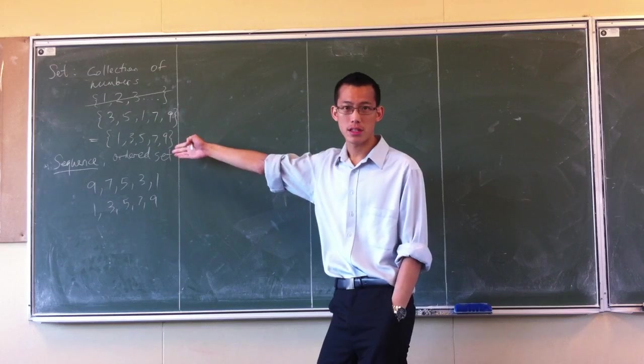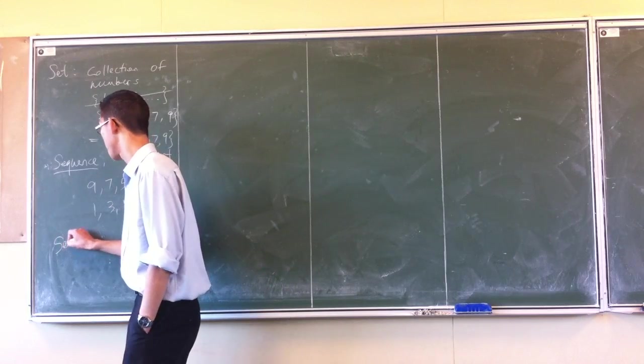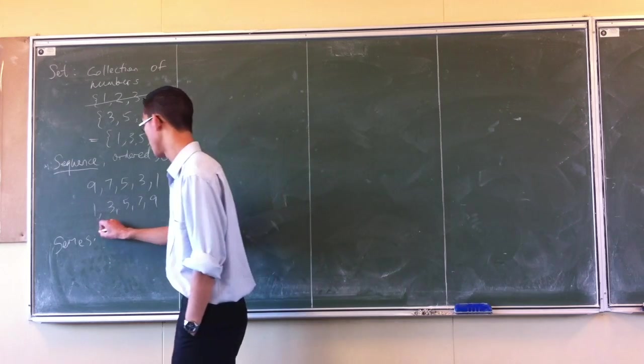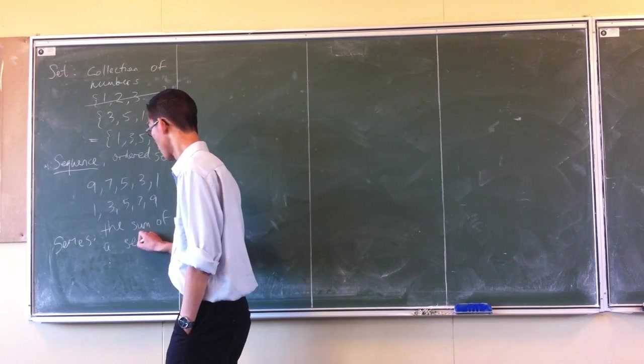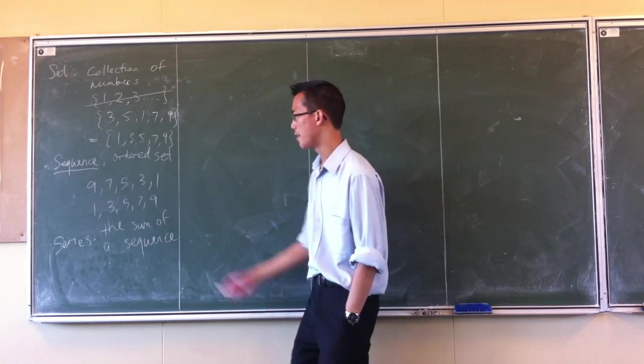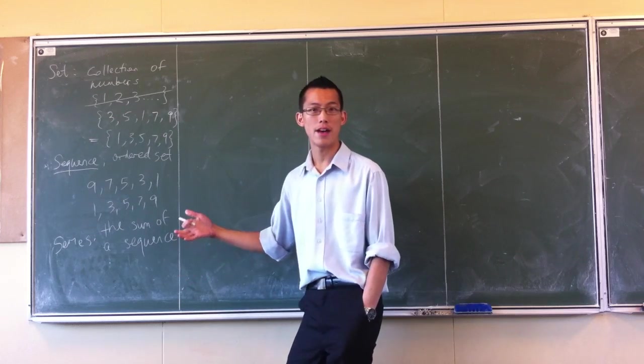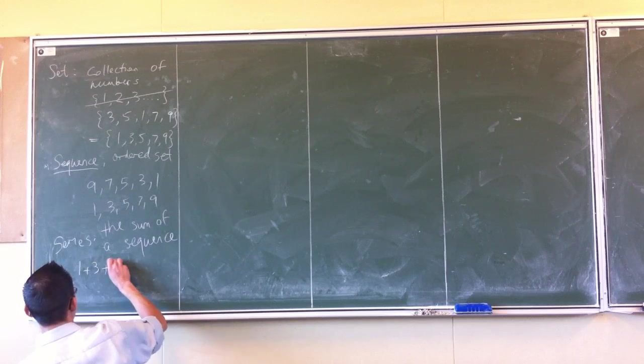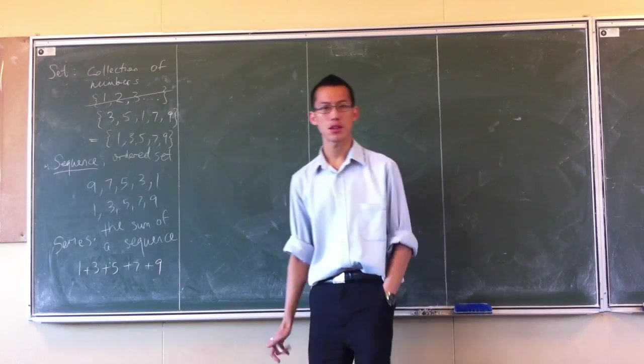So if that's what a sequence is, what's a series? A series is simply adding them all up. A series would be the sum of a sequence, the sum. So essentially, instead of commas in between our terms here, that's what we call each individual thing, each individual value, a term, instead of commas I'm going to have plus signs, that's all. That would be a series.